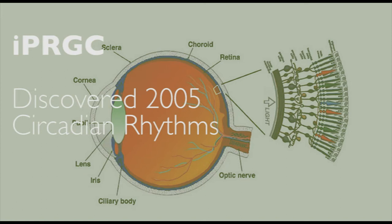The third photoreceptor, which doesn't have to do with vision, was discovered in 2008. They're intrinsically photosensitive retinal ganglion cells, and what they do is regulate our circadian rhythms — our natural daily rhythms and our sleep-wake cycles.